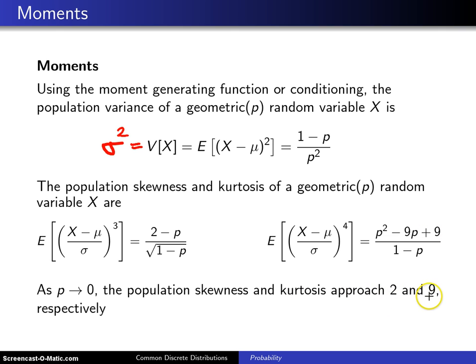And those two numbers, two and nine, happen to be the skewness and kurtosis of an exponential random variable. And the exponential random variable is the only other distribution that shares that memoryless property.